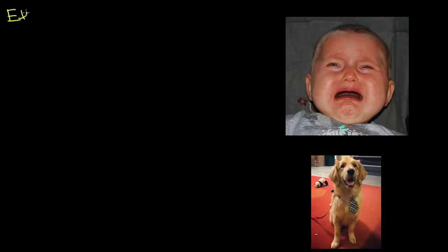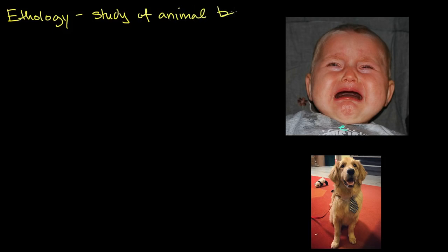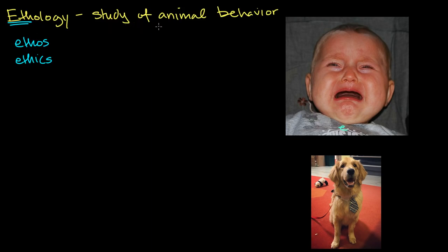In this video, we will begin to explore the field of ethology, which is the study of animal behavior. The word itself, ethology, has its roots in the Greek ethos, and you might also be familiar with the word ethics. Ethos and ethics — you keep seeing this 'eth,' and it's generally referring to something's character. So you could see this is the study of the character of animals, or in general, the behavior of animals.